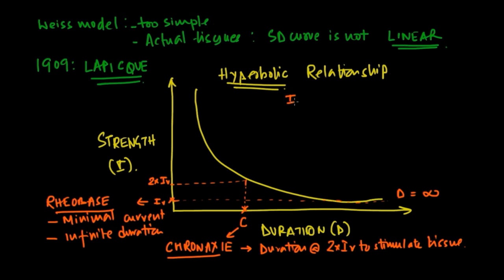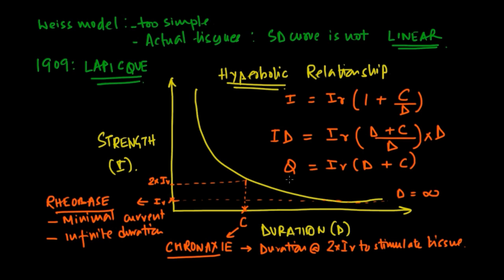He used the equation I equals IR times one plus C upon D, where IR denotes the rheobase, C denotes chronaxie, and D denotes duration. If you multiply both sides by D, this equation is not very different from the one proposed by Weiss.